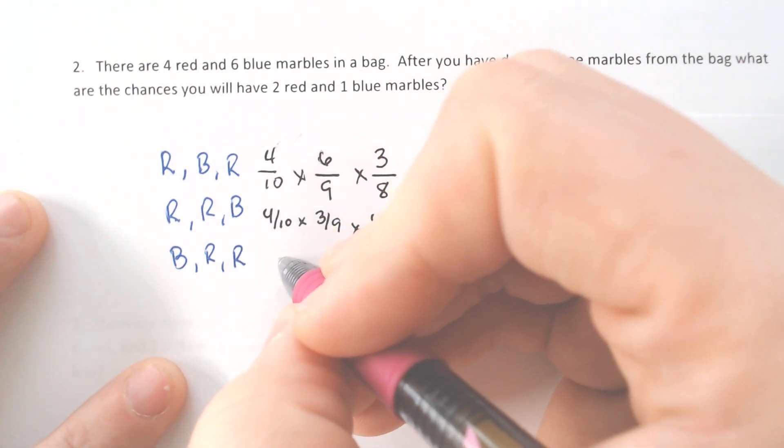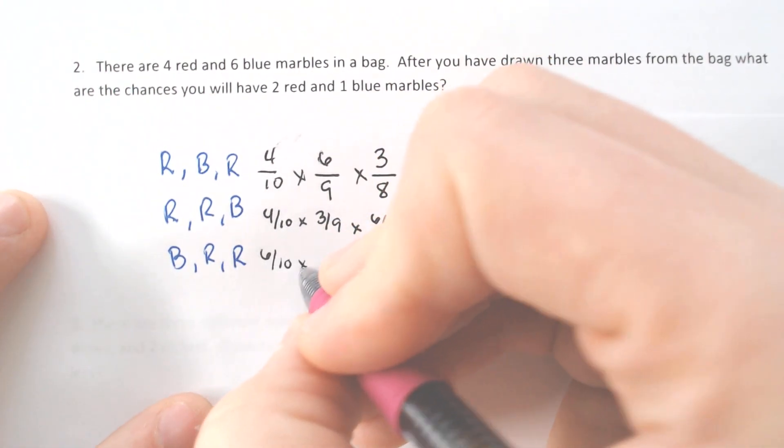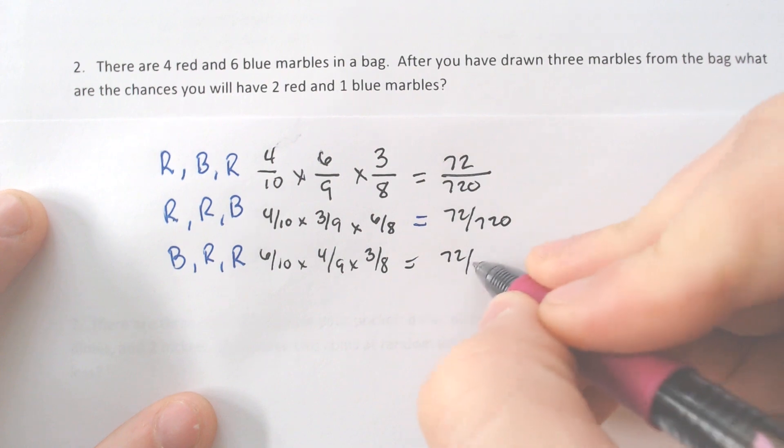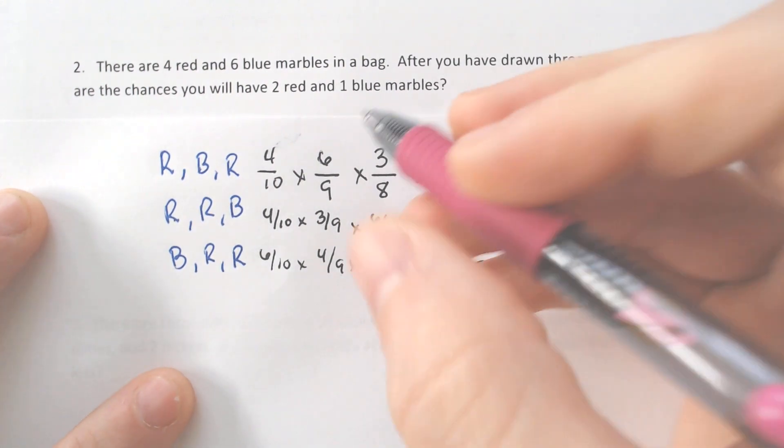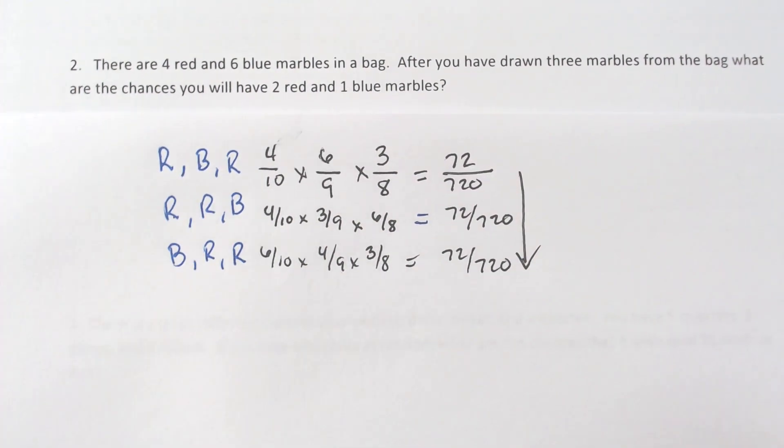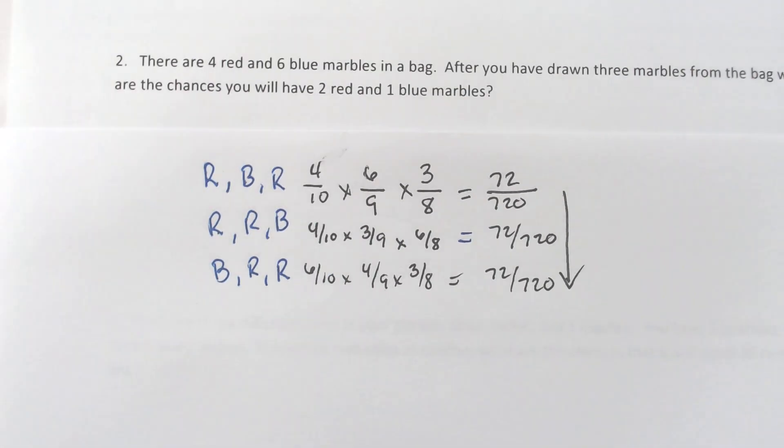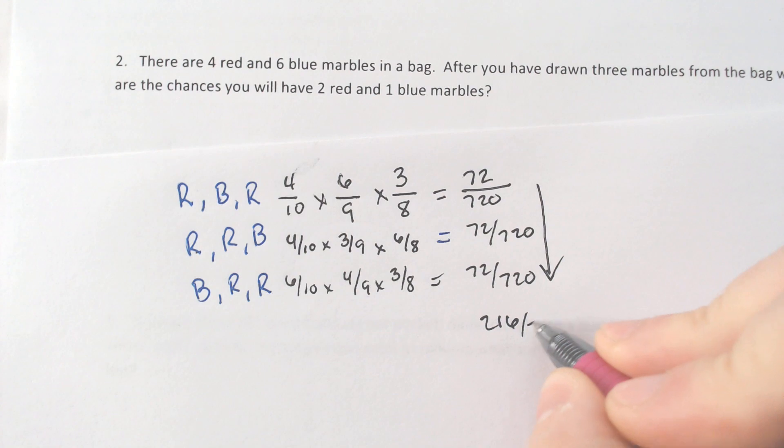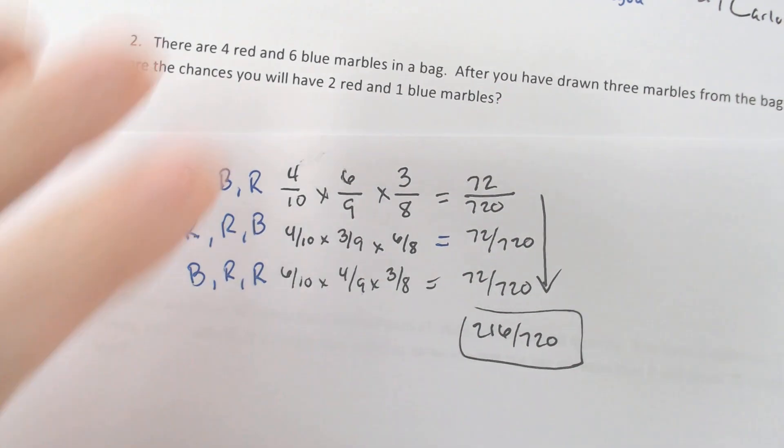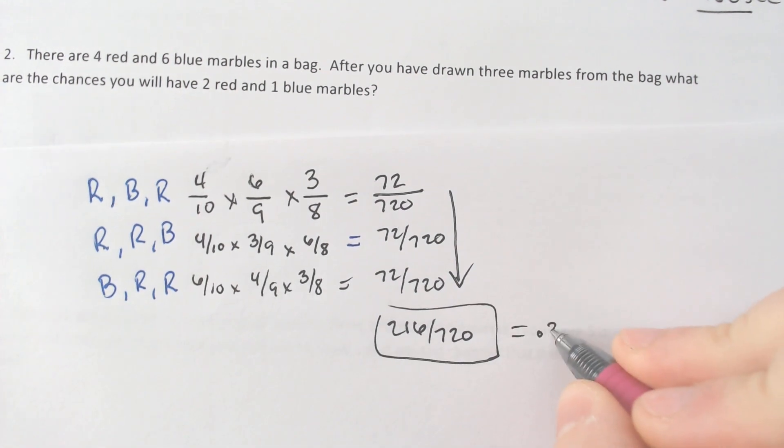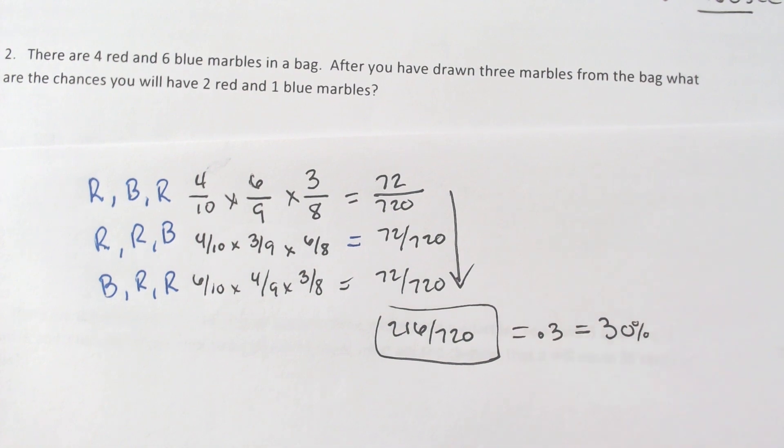And then if we did it again, it's going to equal the same thing again. You get six out of ten blues, then you got four out of nine reds, and then you got three out of eight reds again. And you still get 72 out of 720 because they were all the same scenario. Two reds and one blue. So add them together, if we add those three things together, you end up with times three, you end up with 216 out of 720, which you could simplify if you want to. I would recommend it. You could also divide and get the decimal answer, which in this case is 0.3, or you could write the percent, which is 30% then.